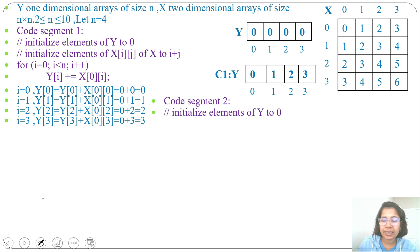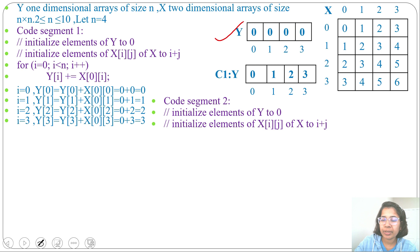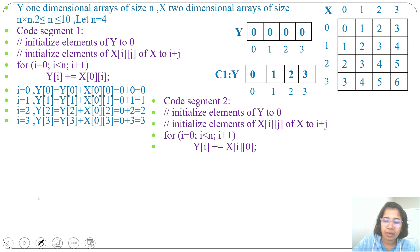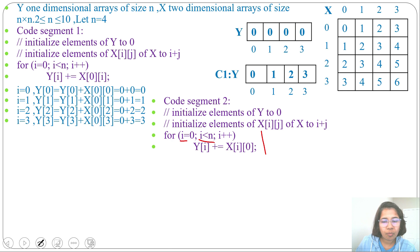Now Code Segment 2. First, initialize elements of Y to 0. Then initialize elements X[i][j] to i+j. Now for i=0, i less than N, i++, the operation is Y[i] += X[i][0]. So Y[i] = Y[i] + X[i][0]. I value will range from 0 to 3 (less than N=4).